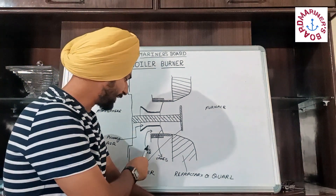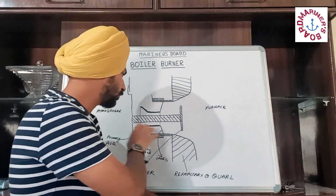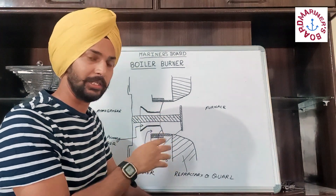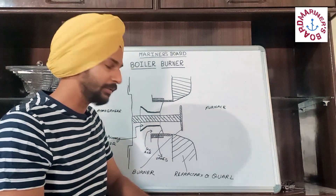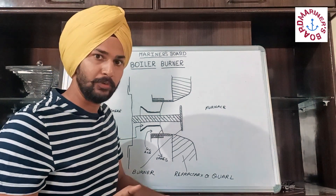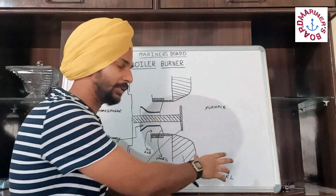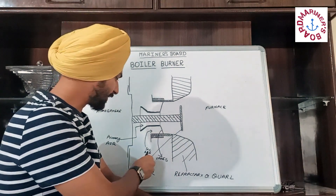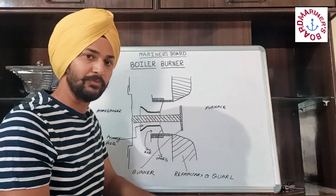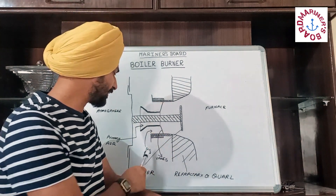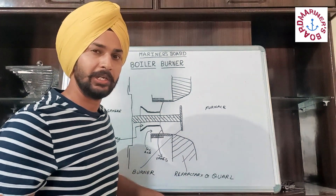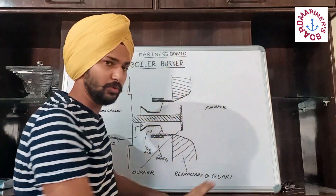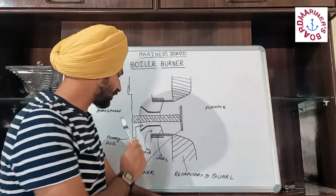The function of secondary air is to pre-purge and post-purge the boiler. After the boiler ignition cycle is over, there are harmful gases present in the boiler that need to be removed. That is done by the secondary air. And even before the boiler is fired, secondary air comes inside the boiler so that any harmful or explosive gases present inside are removed. This is the work of secondary air.